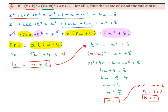So we have 2k equals 2m plus 4. We divide across by 2 to get k on its own: 2k divided by 2 is k, 2m divided by 2 is m, and 4 divided by 2 is 2. So we get k equals m plus 2.